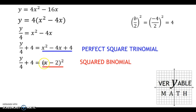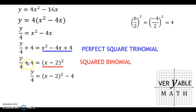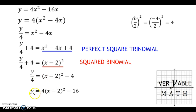Once the equation has a squared binomial on one side and an expression related to y on the other, I just need to solve for y. First I subtract 4, then multiply by 4. I move the positive 4 to the other side as a negative 4, then I multiply everything by 4 — putting the 4 on the outside of the parentheses and multiplying the constant term by 4. So 4 times x minus 2 squared, and negative 4 times 4 gives negative 16. This is now in vertex form.